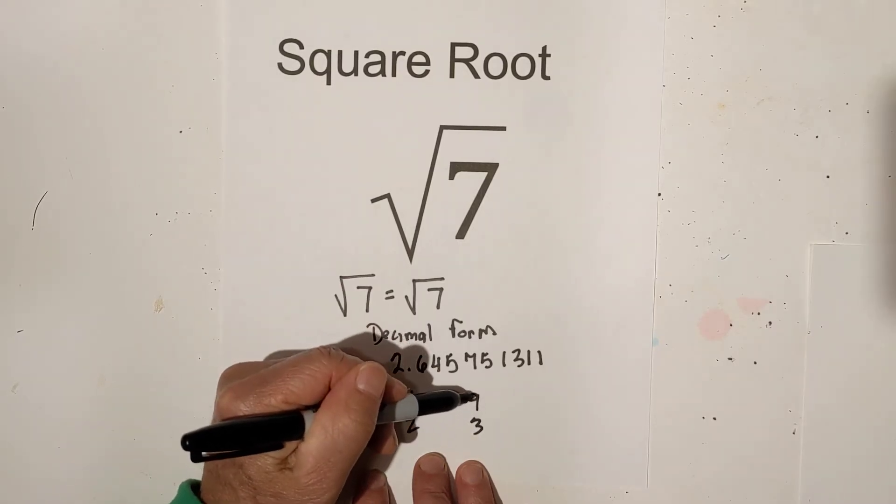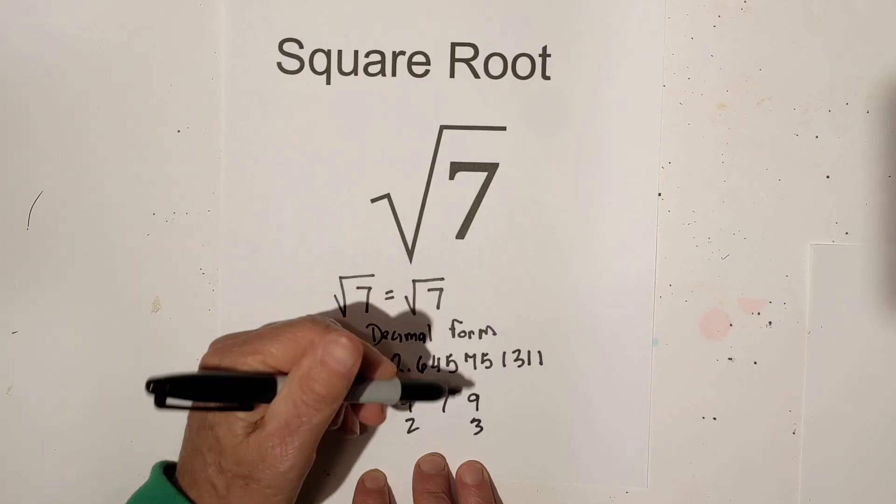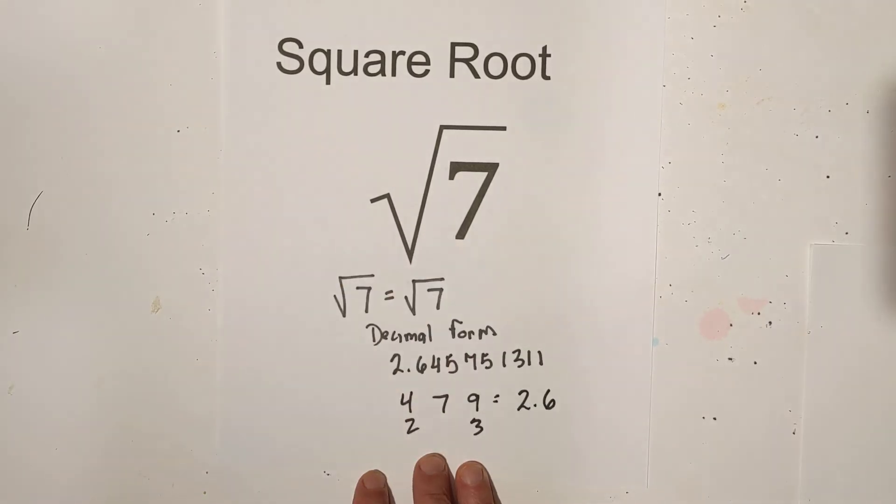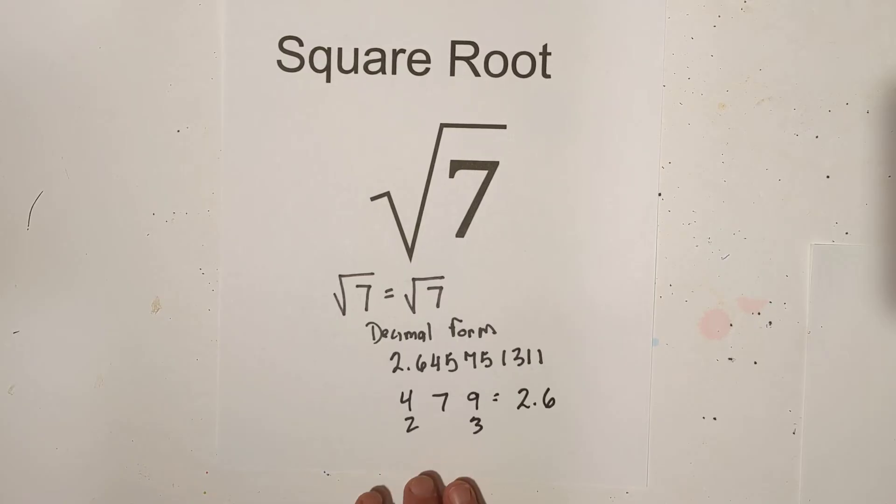And it's closer to 9 than 2, so you can just estimate 2.6. That's just an easy way to estimate a square root.